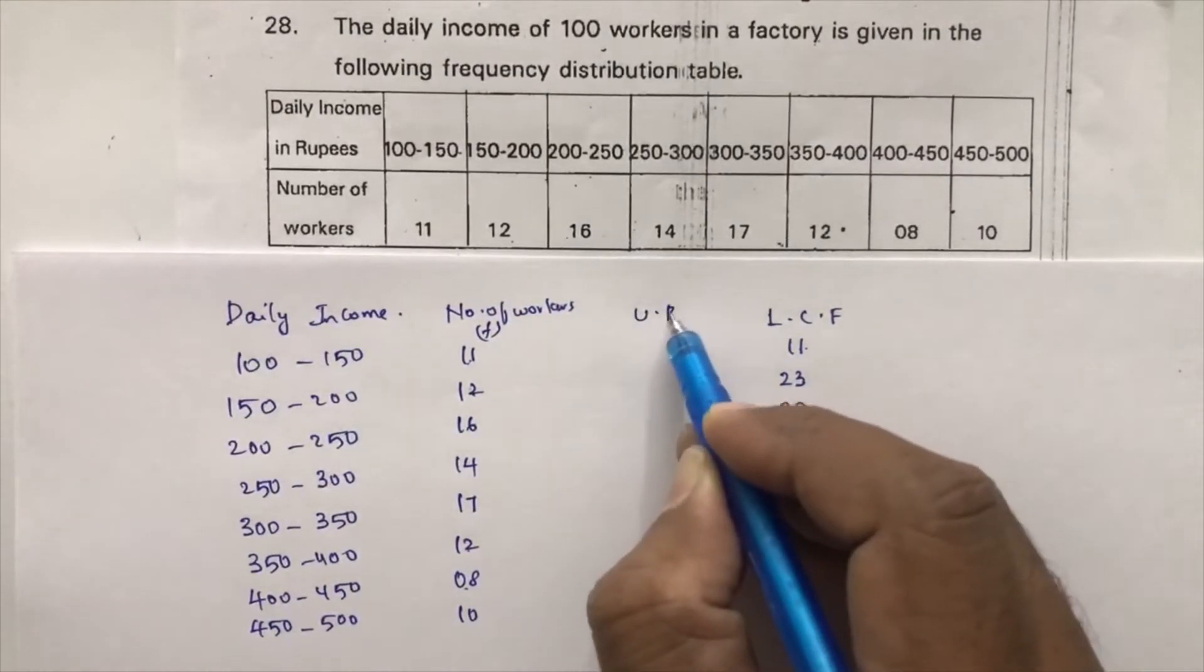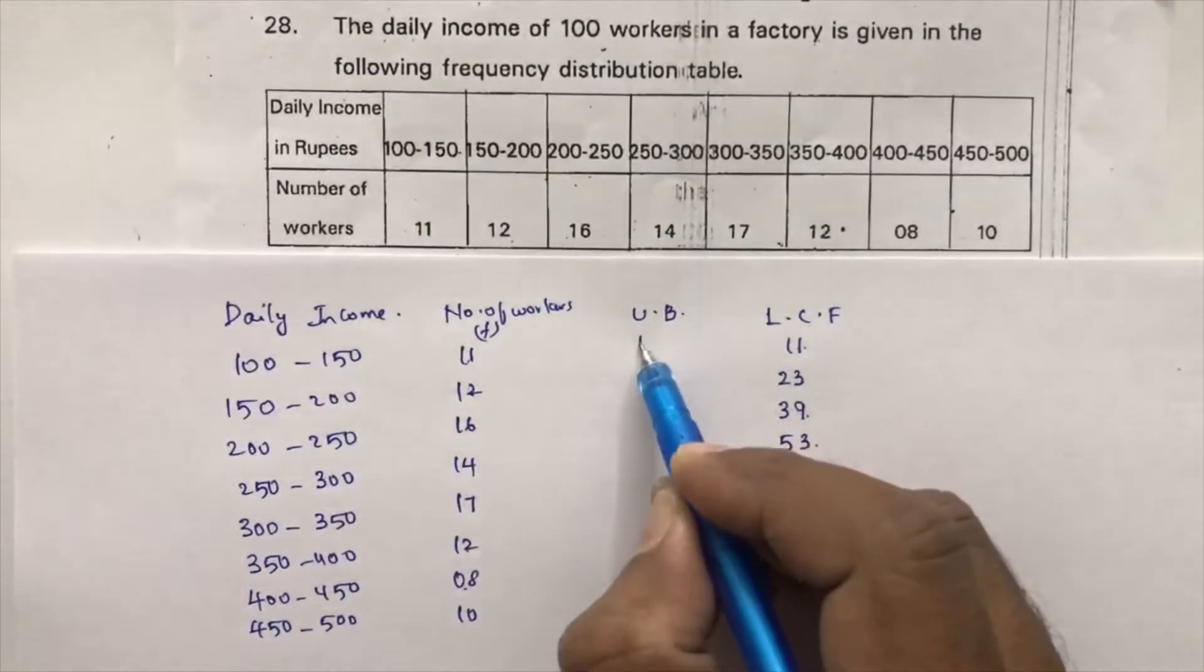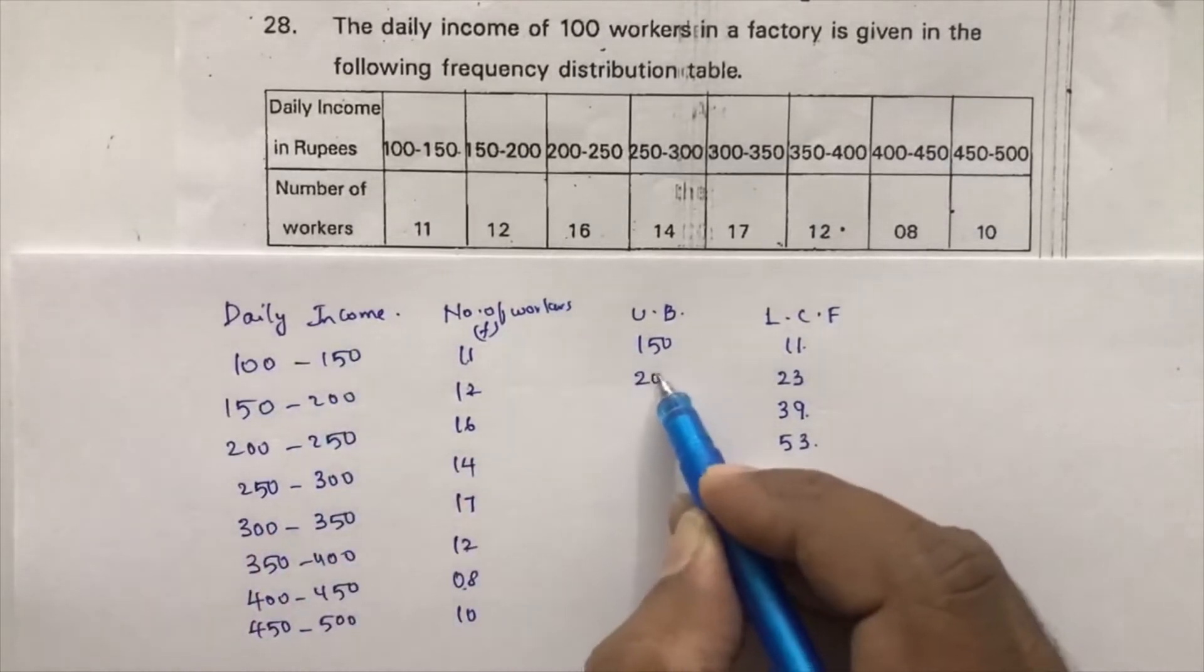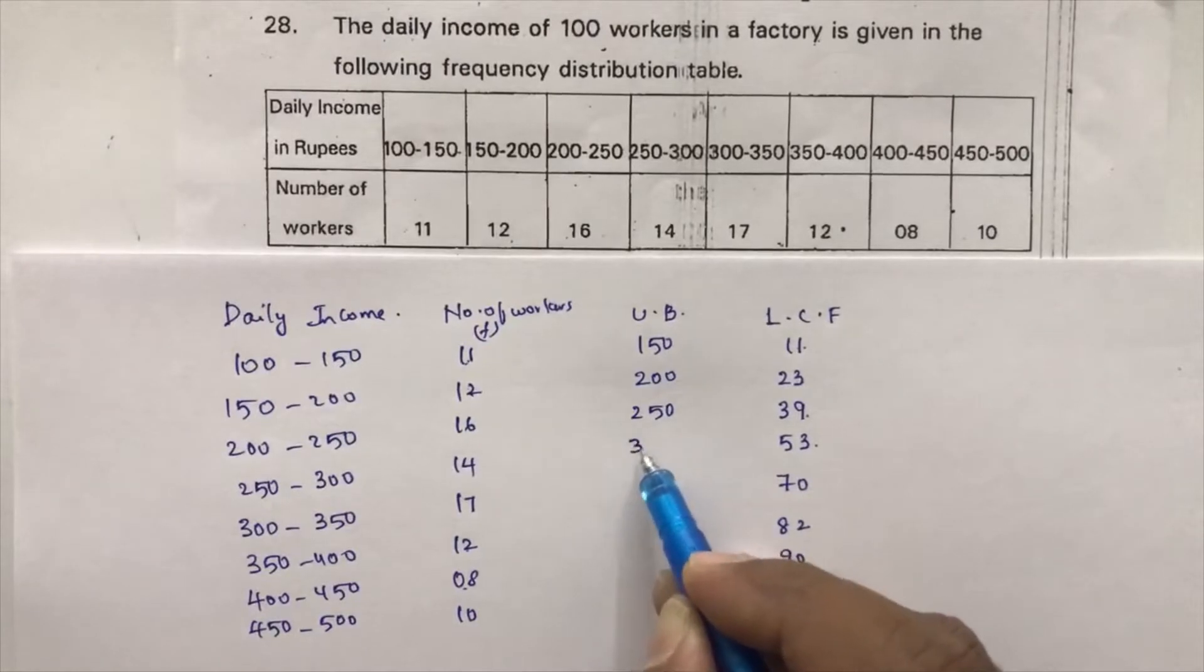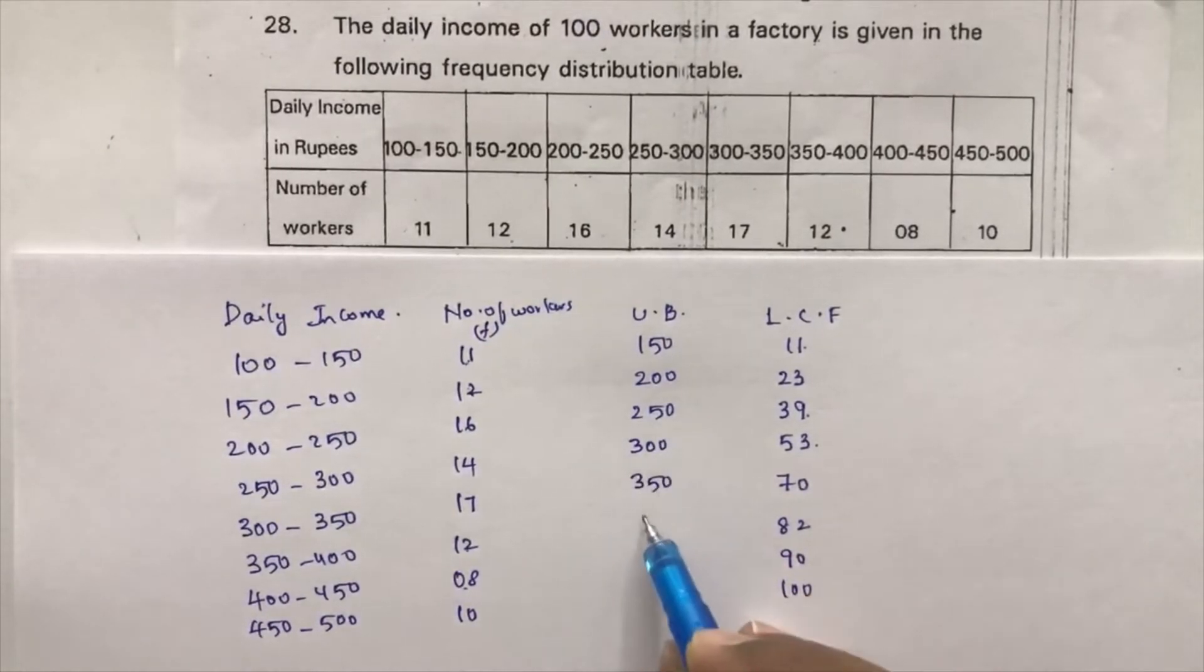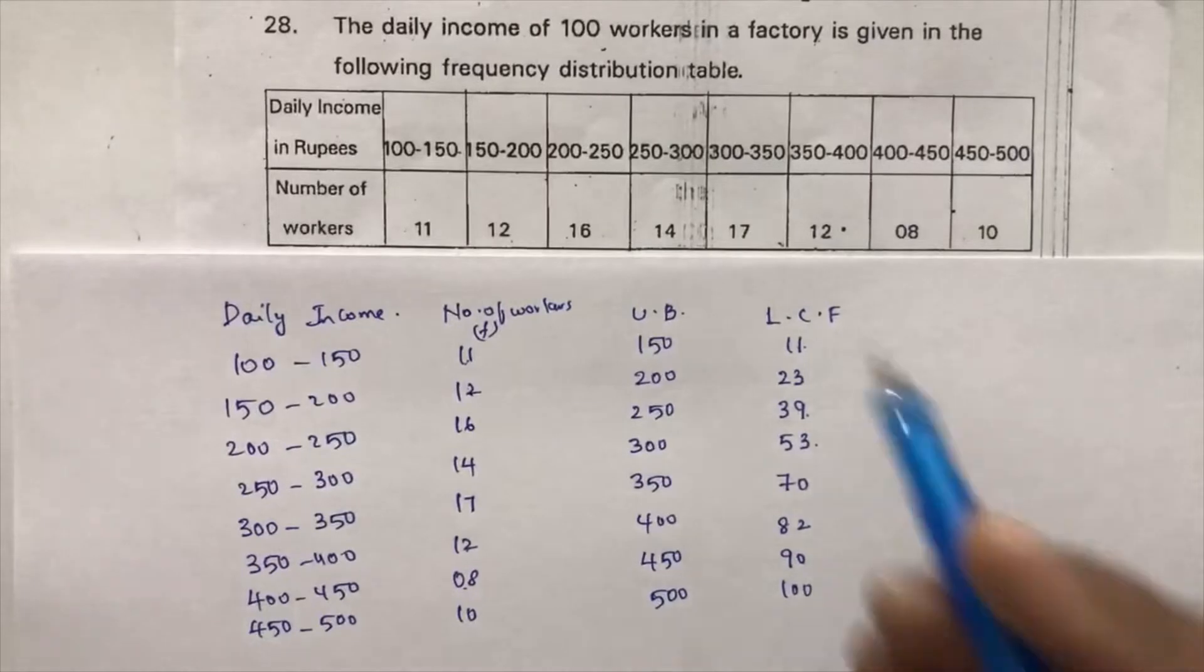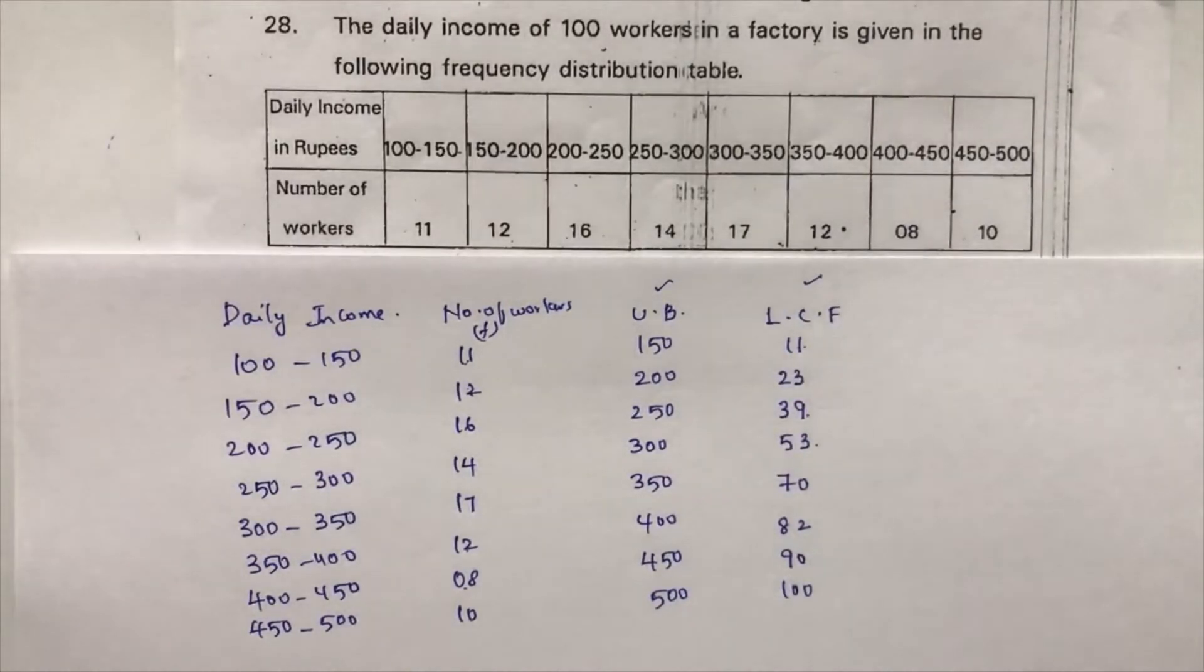To draw the less than cumulative frequency ogive, we will use upper boundaries. So here upper boundaries are like 150. These are lower boundaries and these are upper boundaries. 150, 200, 250, 300, 350, 400, 450, 500. So now, in the graph, we need to plot these two values: upper boundaries and less than cumulative frequency.